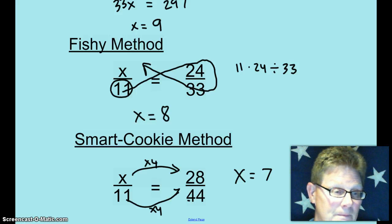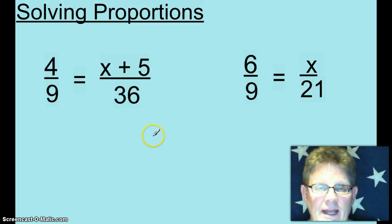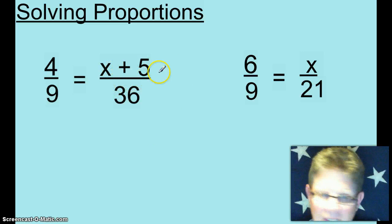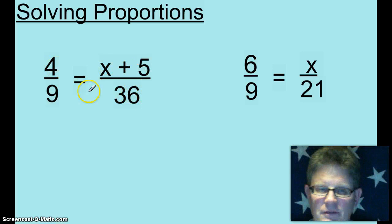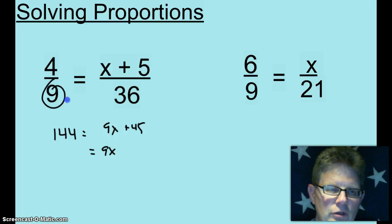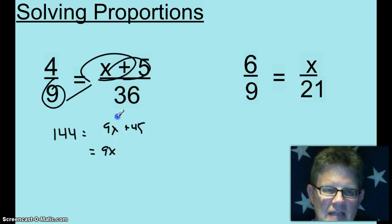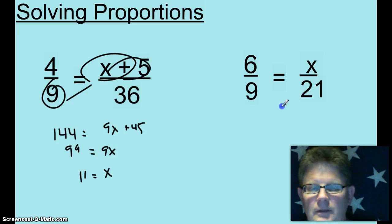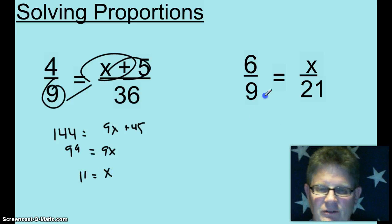So what happens when you can't use the smart cookie method or anything like that? Well, you just might have to cross multiply. 144 equals 9X plus 45. Subtract 45 from both sides. Don't forget when you're cross multiplying the distributive property. It's not 9X plus 5, it's 9X plus 45. 99 equals 9X. 11 equals X.